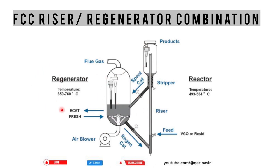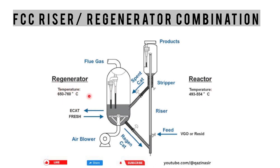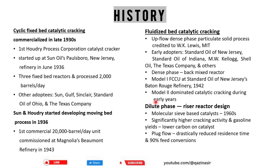The temperature in the regenerator ranges from 650 to 760°C, while the reactor temperature is approximately 493 to 554°C. There is a balance of temperature on both sides. We can use this temperature balance to complete the whole process without requiring extra external energy — the energy difference between the two processes is used to balance the entire system.